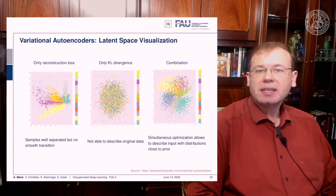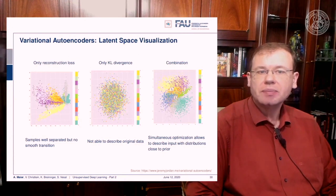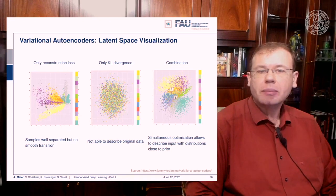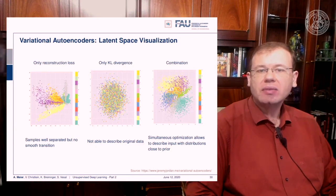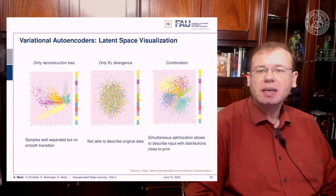So what effect does this have? Well, here we have some latent space visualizations. If you use only the reconstruction loss, you can see that samples are well separated but there's no smooth transition. Obviously, if you only had the KL divergence, then you would not be able to describe the original data. So you need the combination where you simultaneously optimize with respect to the input distributions and the respective KL divergence.